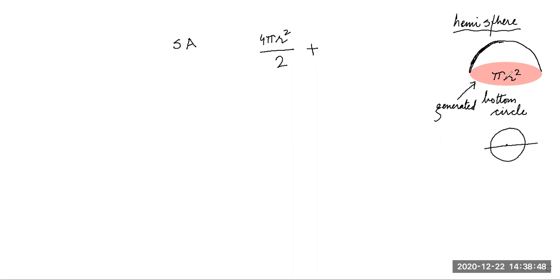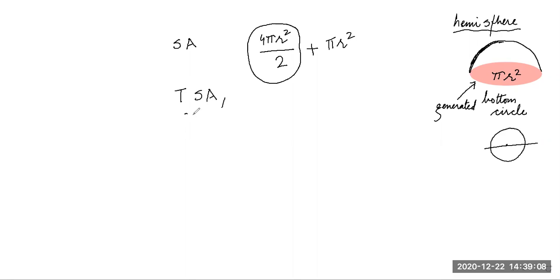The new cut surface is a circle with area πr². So the total surface area of a hemisphere is half the outer surface area of the sphere plus the area of the circle: 2πr² + πr² = 3πr².